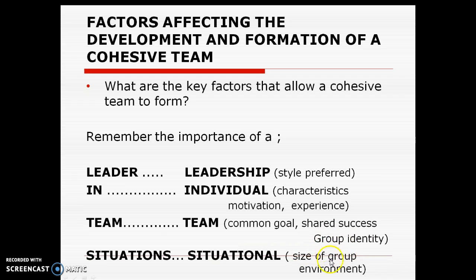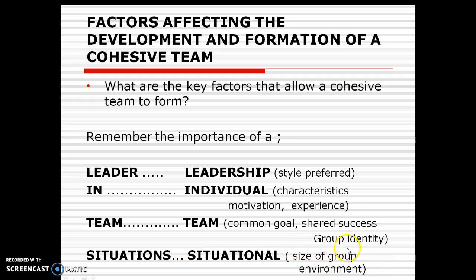Finally, if you have a group identity — for example, the team wears the same kit and has a certain identity — you're more likely to be cohesive. The final category is situational factors, which refer to the situation a team is in that can increase or decrease cohesion. For example, if the size of a group is small, they're more likely to be cohesive. Looking at a basketball team with five players, there's more chance they will be cohesive due to the fact that there are fewer players.